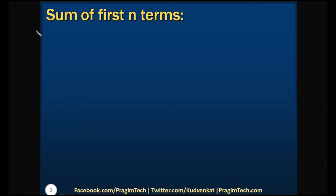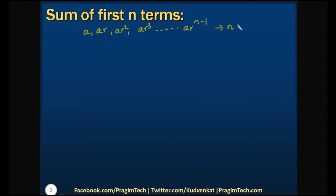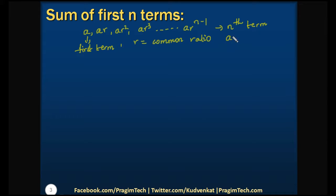In order to find that, let us write the general representation of a geometric progression: A, which indicates the first term, AR where R is the common ratio multiplied with the first term, AR squared, AR cubed, and so on up to AR to the power of n-1. Here AR to the power of n-1 indicates the nth term, which we discussed in our earlier session. Here A is the first term and R is the common ratio, which we can derive by dividing the second term by the first term — that is AR divided by A, which equals R.